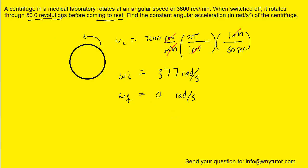And then we're told that the centrifuge undergoes 50 revolutions. Now that's going to be the angular displacement. But revolutions is also a non-standard unit. So we're going to have to convert that into the standard unit of radians. And once again, we know one revolution corresponds to two pi radians. We can cancel out the revolutions, and that's going to give us 100 pi radians.